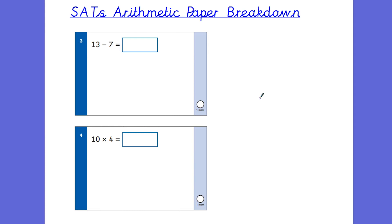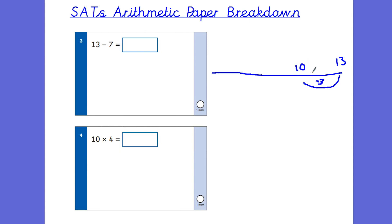The next question is similar but this time we are counting backwards. You could get the children to draw a number line and put 13 at the end. Then subtract part of the 7 — you could subtract 3 first, which would make 10. Then thinking about our number bonds, if we subtract another 4 — because 7 is made up of 3 and 4 — you are left with 6. So the answer would be 6.